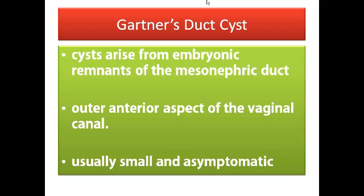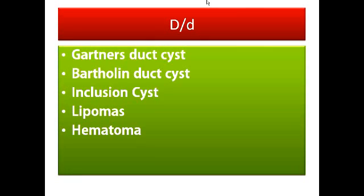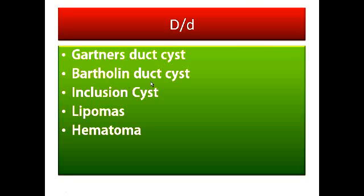These were the differential diagnoses of vaginal cysts and swellings. You can now differentiate between Gartner's duct cysts, Bartholin duct cysts, inclusion cysts, lipomas, and hematomas — their location differs. Gartner's duct cysts are mostly found on the anterior vaginal wall; Bartholin duct cysts are found between the hymen and labia minora; inclusion cysts on the posterior vaginal wall. Lipomas are superficial fat-cell cysts and hematomas are due to injuries or spontaneous varicose vein rupture.